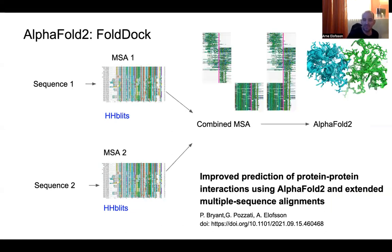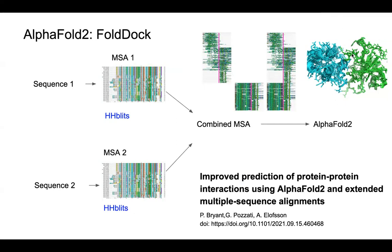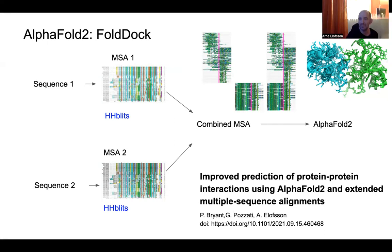For example, in our lab we made AlphaFold2 able to predict protein-protein interactions by taking two MSAs, merging them together, and predicting the complex. As you can see, in this case the prediction is quite good — the model in blue is nearly identical to the native complex. That's not what we're going to do today, but now in the lab we're going to run AlphaFold2 and see how it works using ColabFold. Thank you very much!